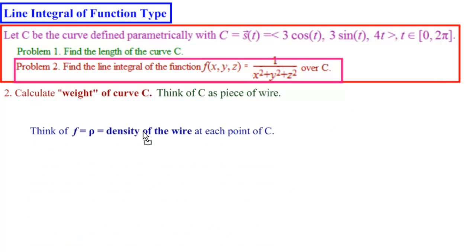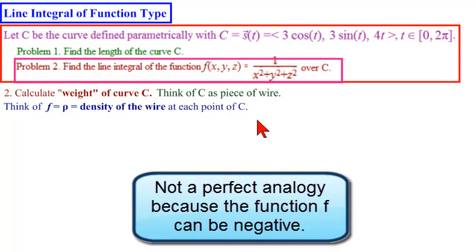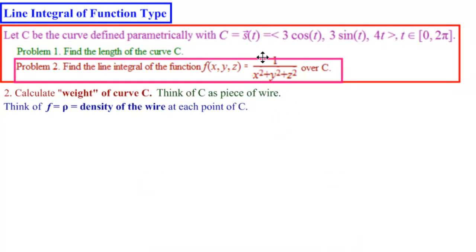And then we want to think of f as like a density function. So it's the density of the wire at each point of C, but the density can change according to the position of the point. This is not a perfect analogy because the function can actually be negative, whereas density is always positive. Our function here is positive. But it's a pretty good analogy.